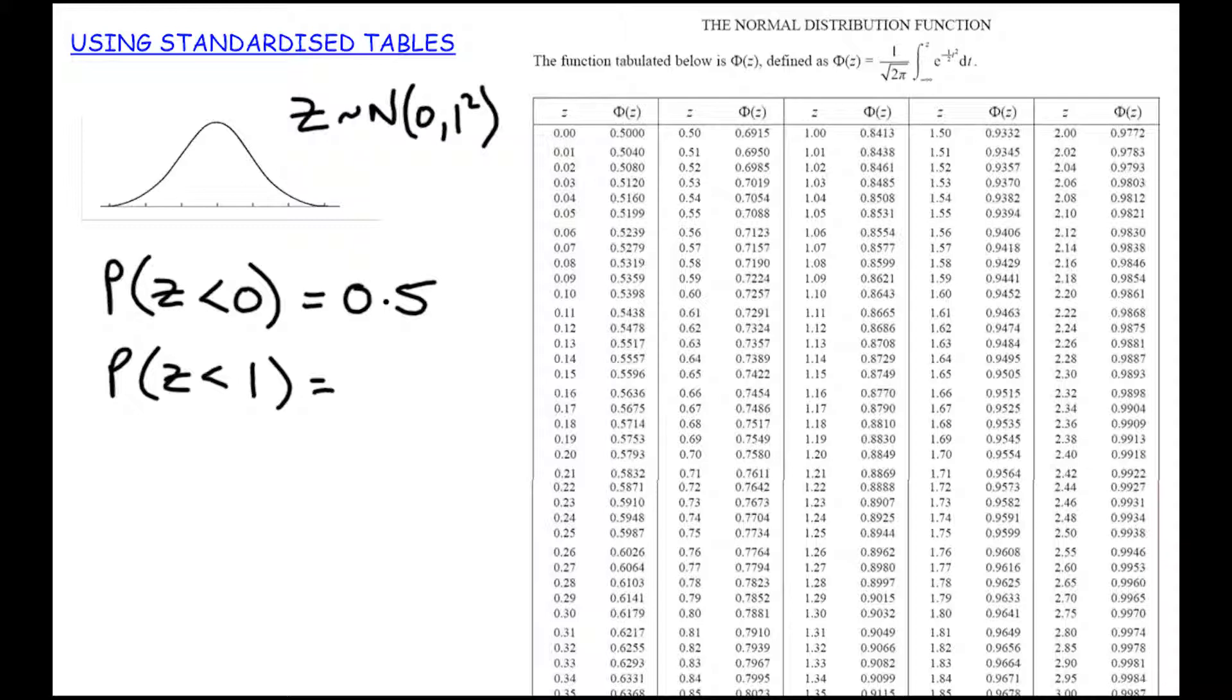We may be able to recall this from the 68, 95, 99.7 rule, or we can just use this handy table, and I'm going to look up this Z score of 1. I'm going to look up in the table, and that lets me know the probability that it's less than or equal to 1 is 0.8413. So for any normal distribution, the probability that it's less than 1 standard deviation away is 0.8413.